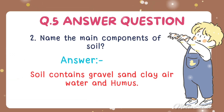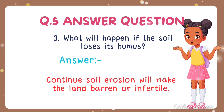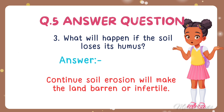The second question: Name the main components of soil. The answer is soil contains gravel, sand, clay, air, water and humus. The third question: What will happen if the soil loses its humus? The answer is continuous soil erosion will make the land infertile.